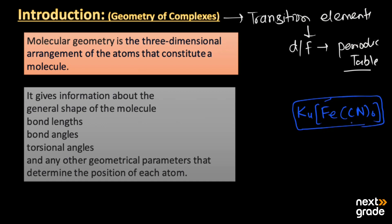Now, what is the geometry? Basically, the word geometry refers to the three-dimensional arrangement of the atoms that constitute a molecule — all the atoms making up the molecule or compound and how these atoms arrange themselves in a 3D structure. This is called the molecular geometry of the compounds or complexes.